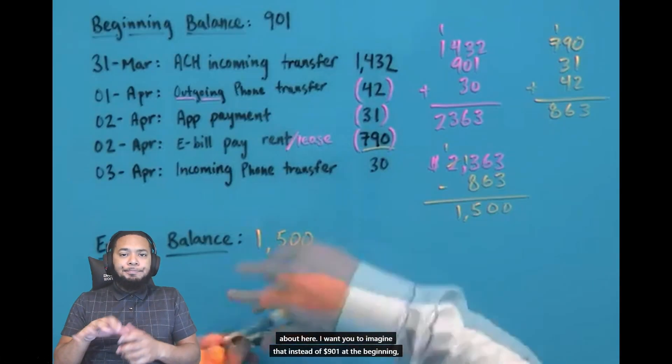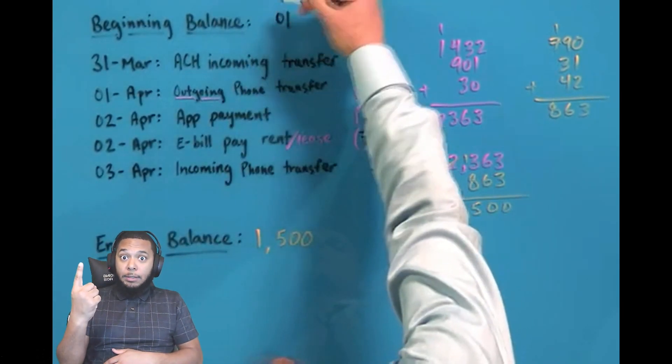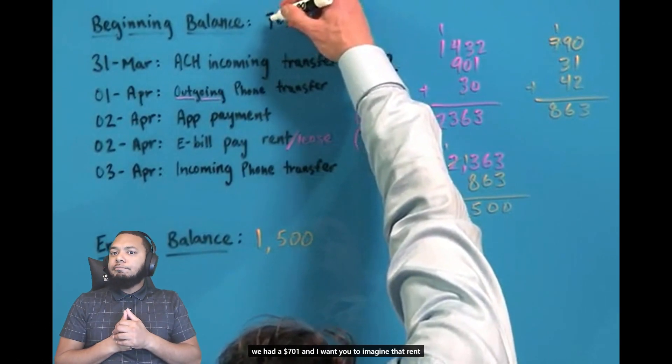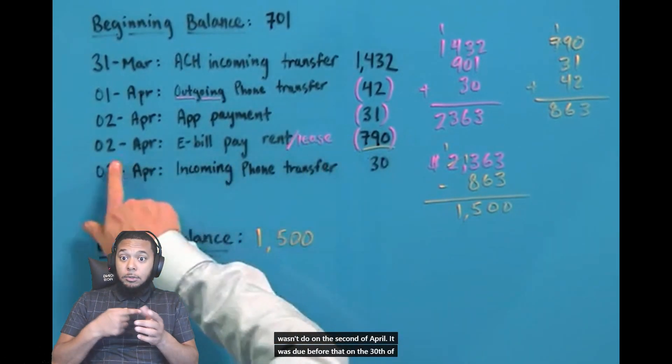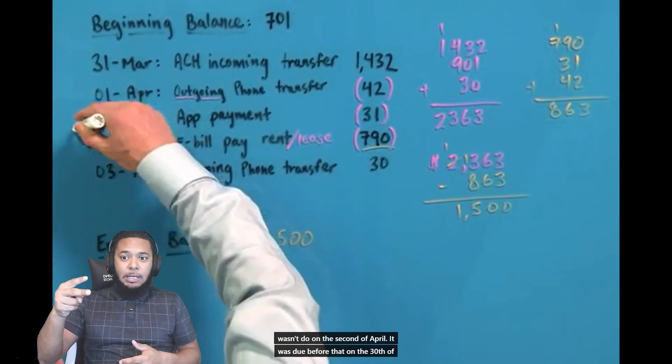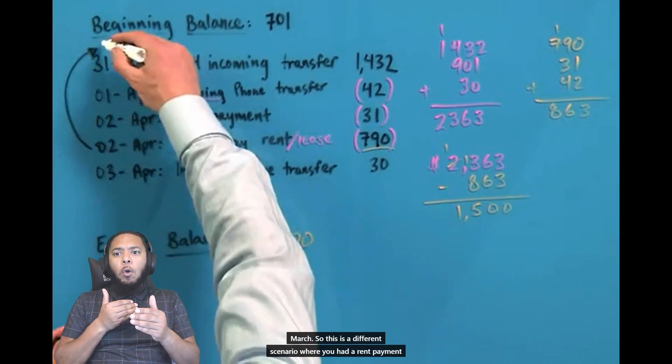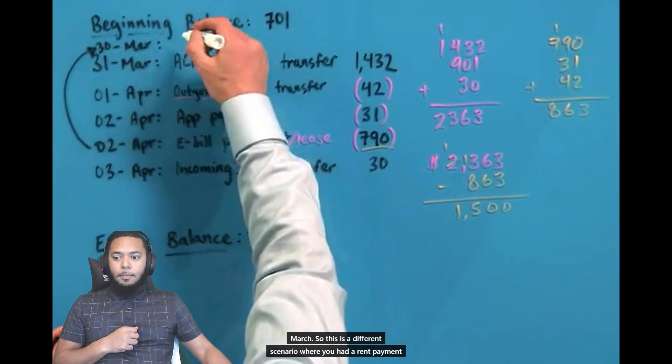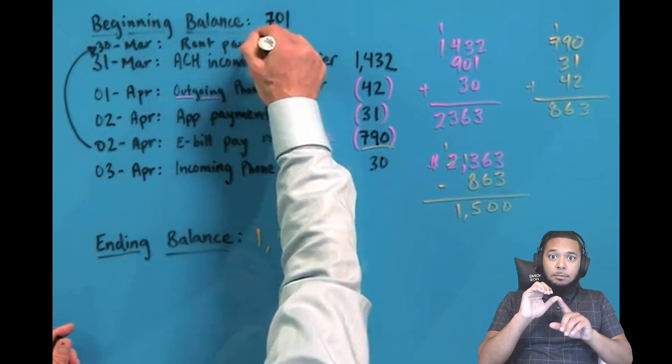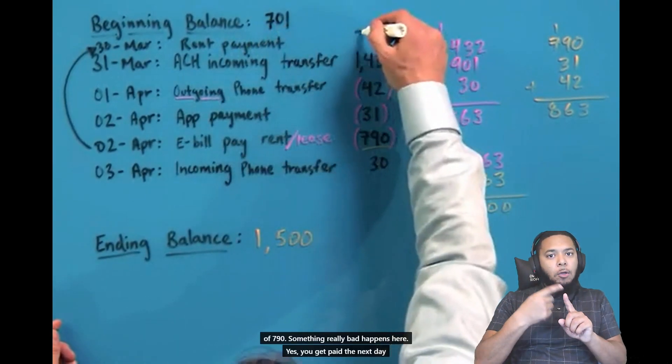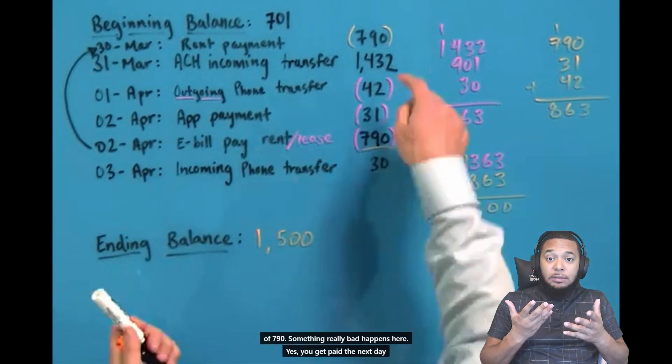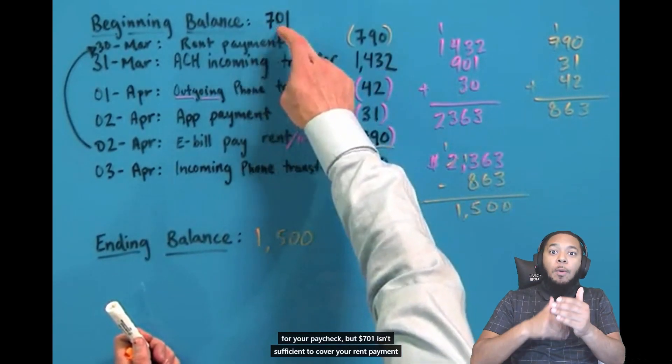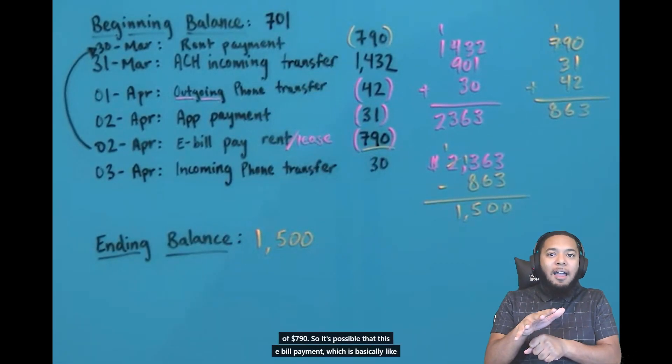There's one thing though that I want to have you think about here. I want you to imagine that instead of $901 at the beginning, we had $701. And I want you to imagine that rent wasn't due on the 2nd of April. It was due before that on the 30th of March. So this is a different scenario where you had a rent payment of $790.